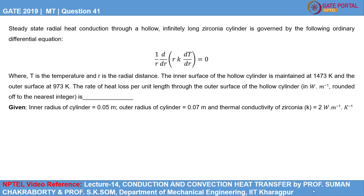GATE 2019 Metallurgical Engineering Question 41. Steady-state radial heat conduction through a hollow infinitely long zirconia cylinder is governed by the ordinary differential equation: (1/r) d/dr (r·k·dT/dr) = 0, where T is the temperature and r is the radial distance. The inner surface is maintained at 1473 K and the outer surface at 973 K. The inner radius is 0.05 m, the outer radius is 0.07 m, and the thermal conductivity of zirconia is 2 W/m·K.